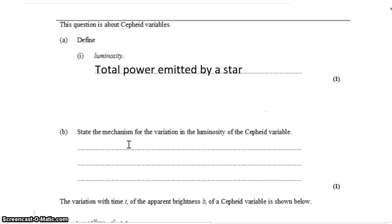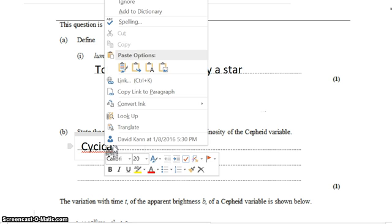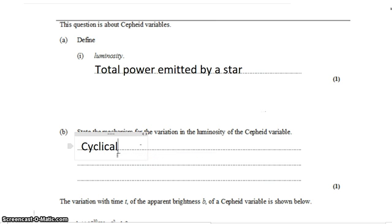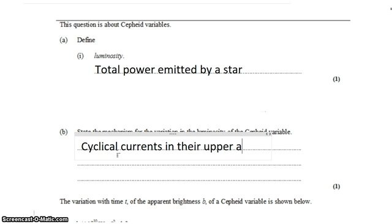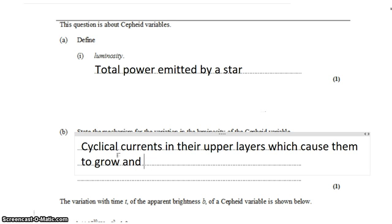The reason that they change luminosity is there are cyclical currents in their upper layers which cause them to grow and shrink in volume. As their volume grows, their luminosity grows.